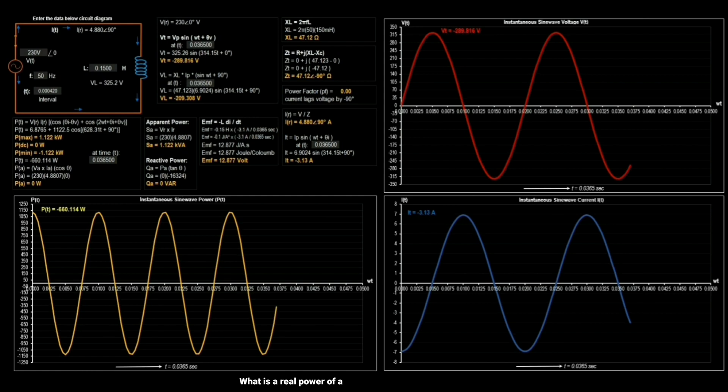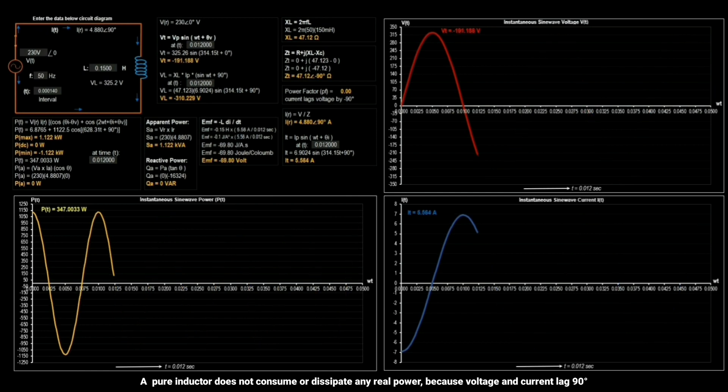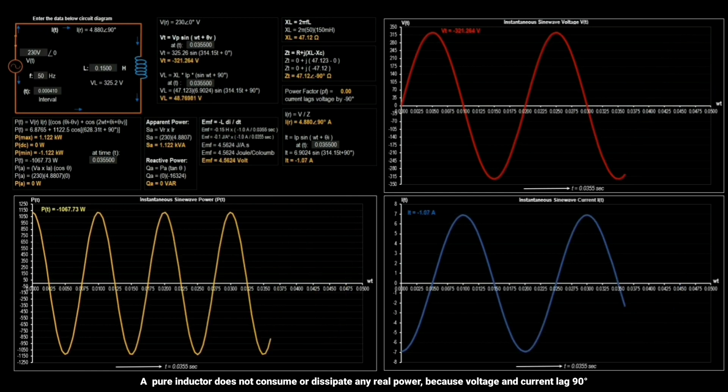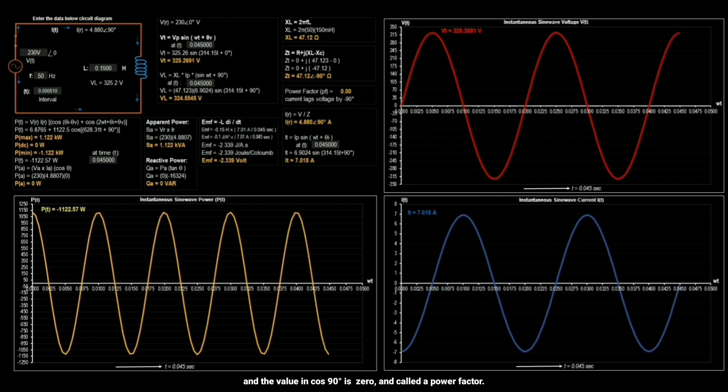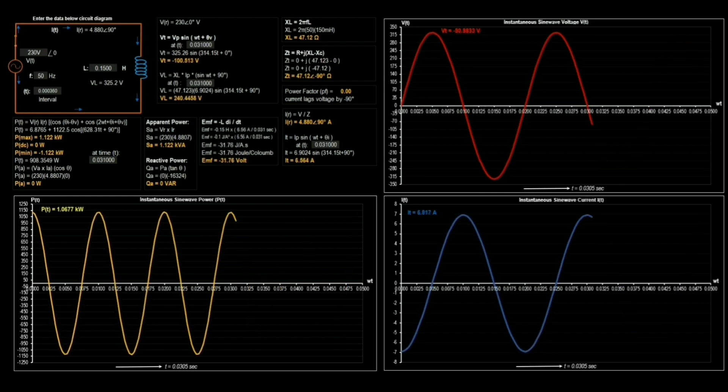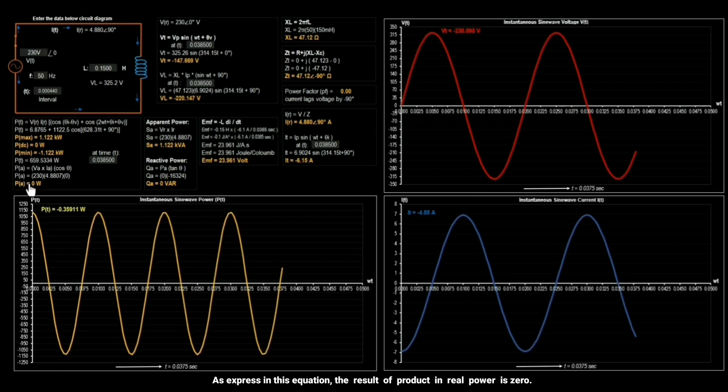What is a real power of a pure inductance in an AC circuits? A pure inductor does not consume or dissipate any real or true power because voltage and current lag 90 degrees and the value in cos 90 degrees is 0, and called a power factor. As expressed in this equation, the result of product in real power is 0.